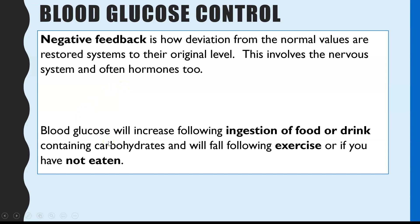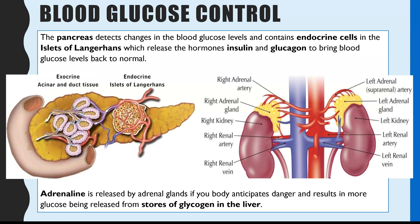For blood glucose, the amount of glucose in your blood will increase after eating or drinking sugary drinks — basically anything containing carbohydrates — and it will decrease after exercise and if you haven't eaten much. This is detected by your pancreas. The receptors are within the endocrine cells of the pancreas, specifically in structures called the islets of Langerhans. These are the cells where the changes are detected.